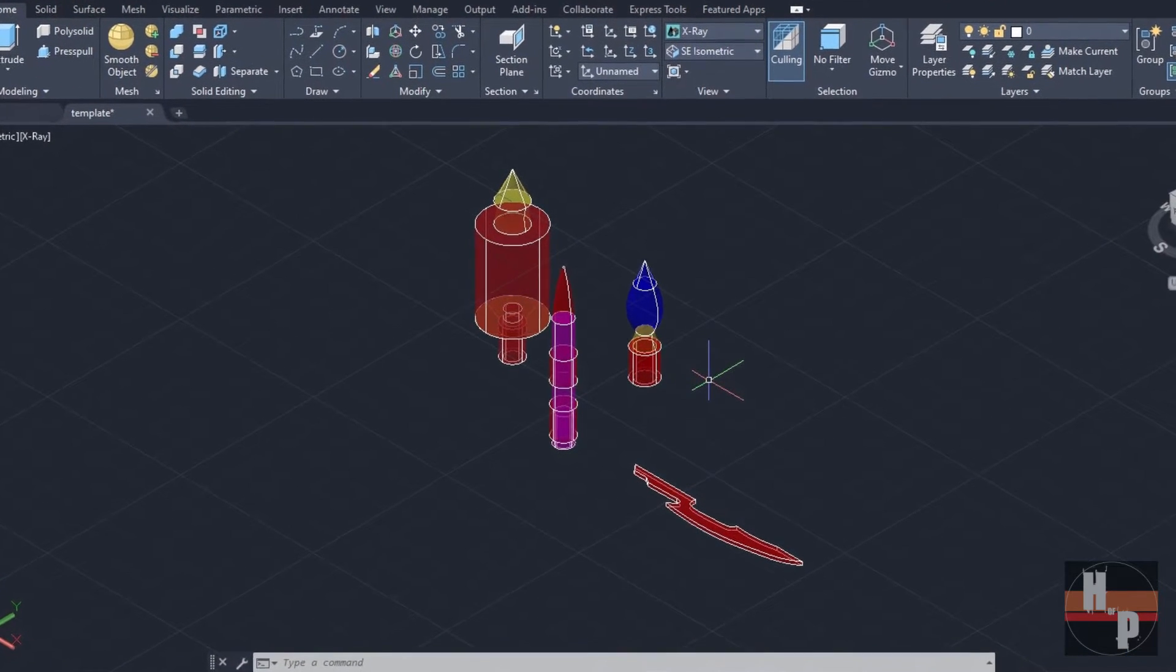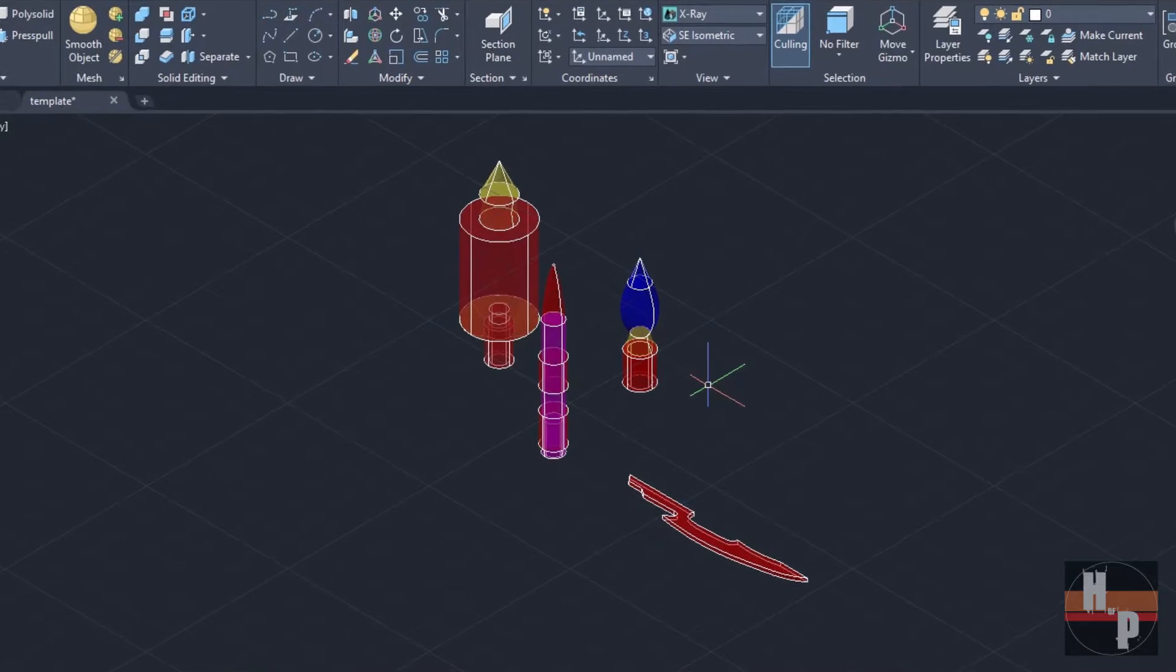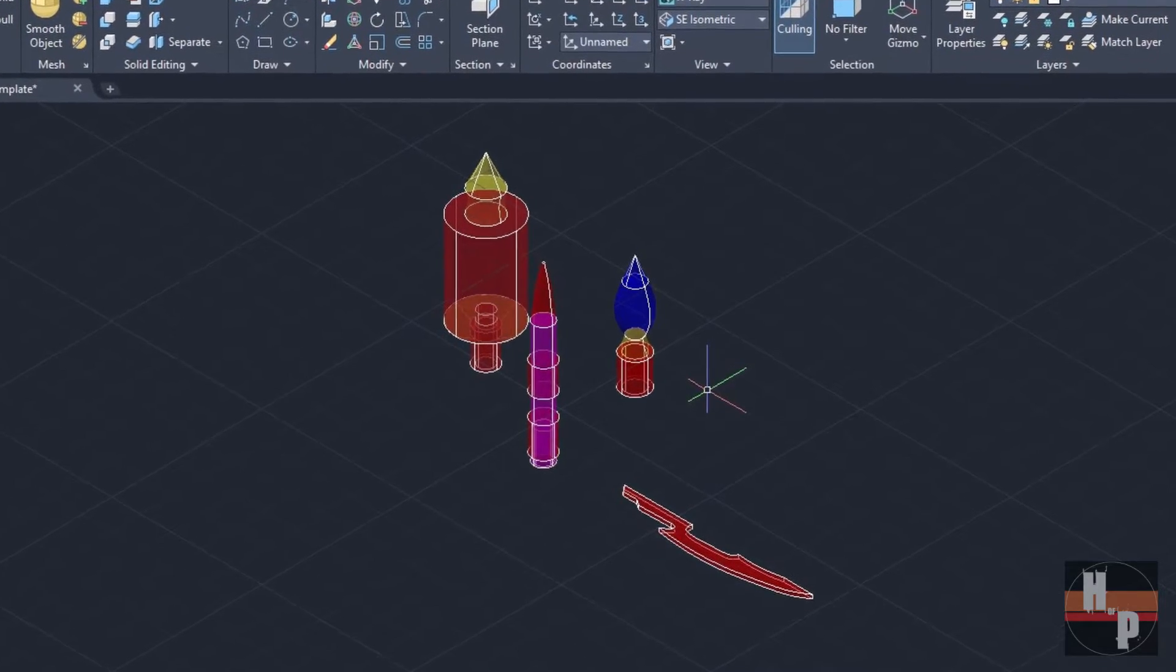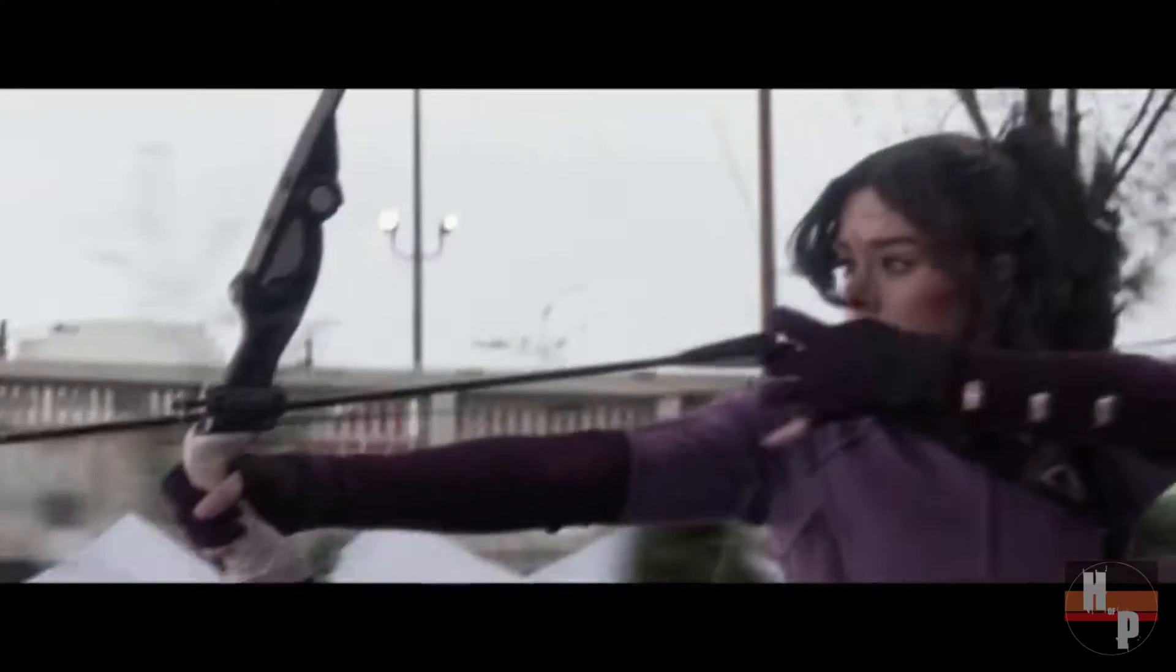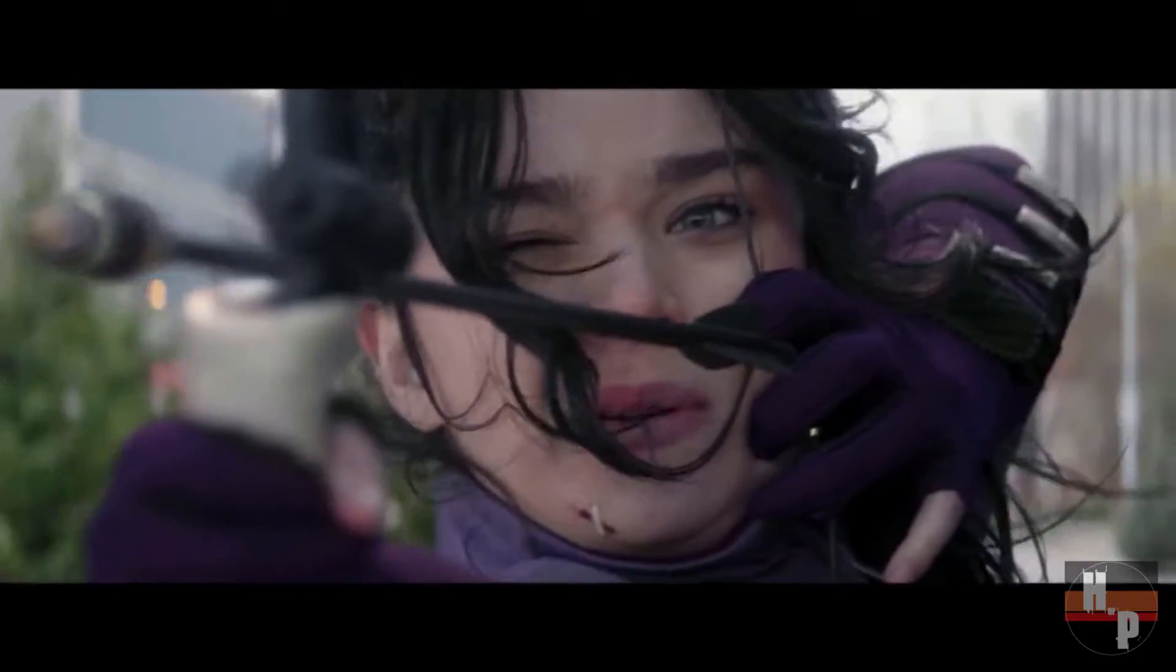I drafted each of these arrow tips in AutoCAD. I wanted to create a variety so I made a standard arrow, an acid tip arrow, and this spider wire arrow as seen in episode 3.